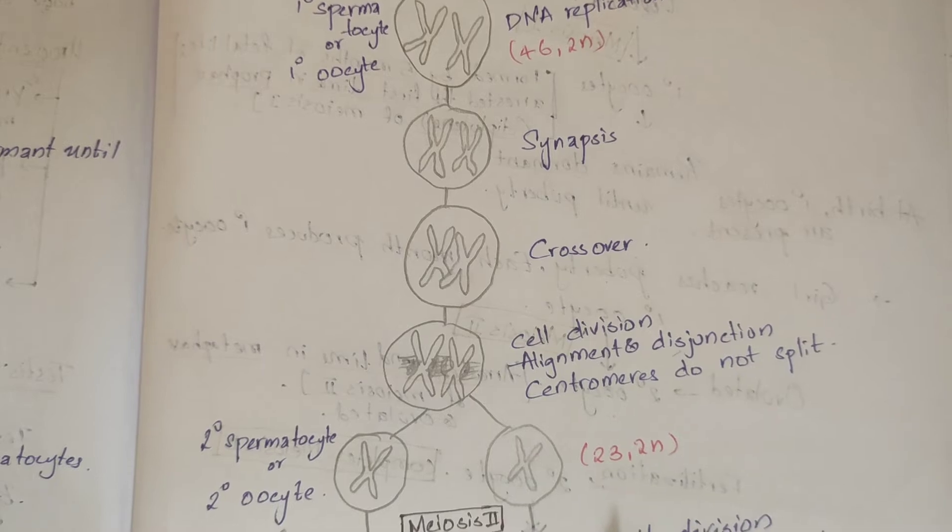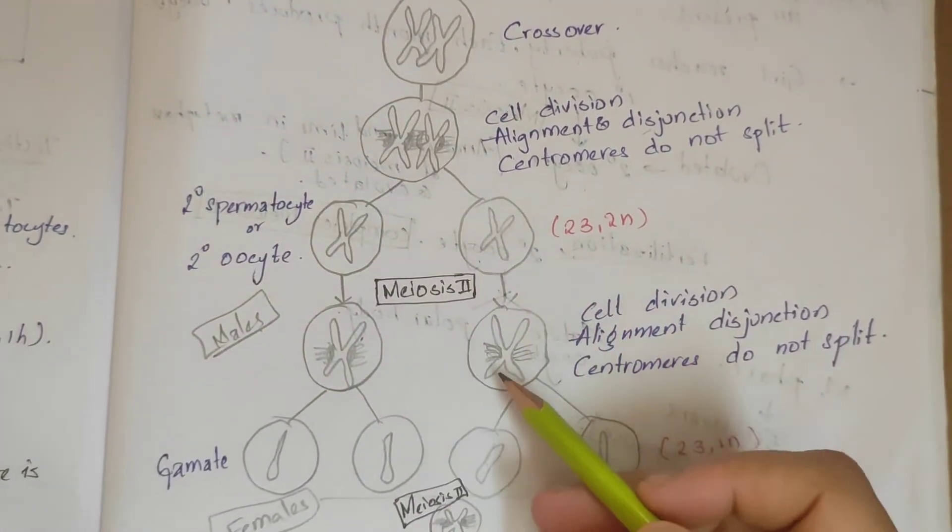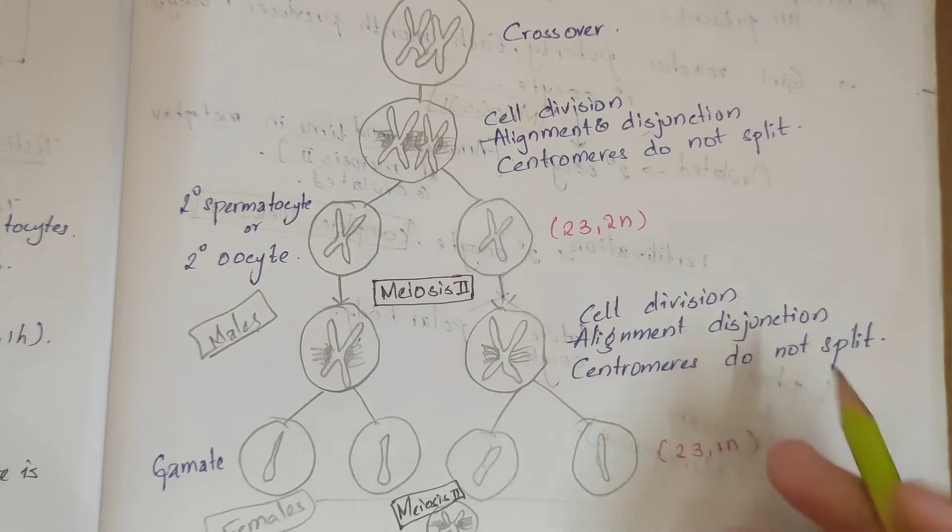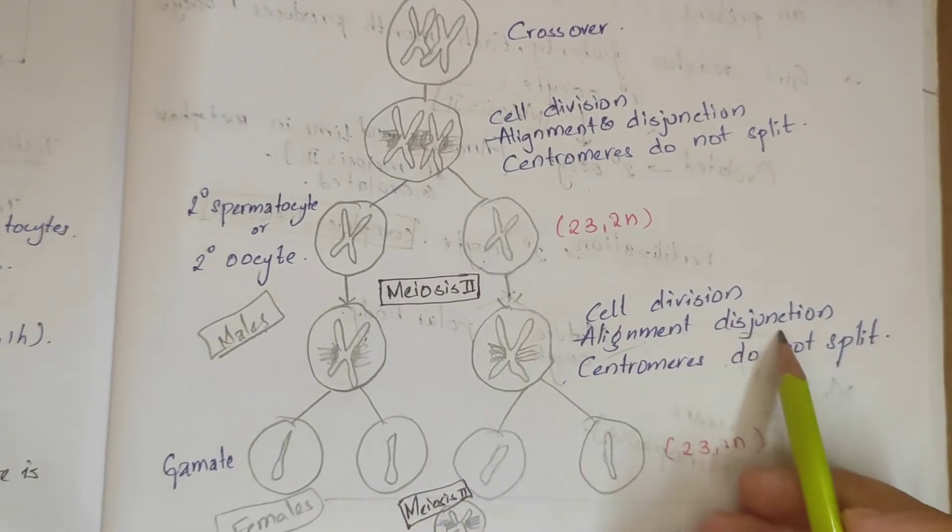Next is meiosis 2. In meiosis 2, synapsis and crossover do not occur - only disjunction takes place.